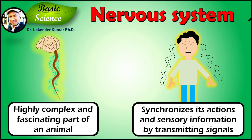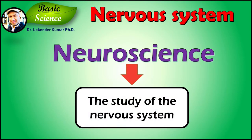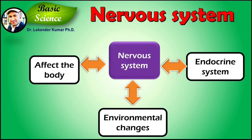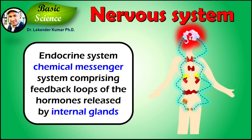The nervous system is a highly complex and fascinating part of an animal that synchronizes its actions and sensory information by transmitting signals from different parts of the body. Neuroscience is the field of science that focuses on the study of the nervous system. The nervous system detects environmental changes that affect the body and then works in association with the endocrine system to respond to such signals or changes. The endocrine system is a chemical messenger system comprising feedback loops of the hormones released by internal glands of an organism directly into the circulatory system.